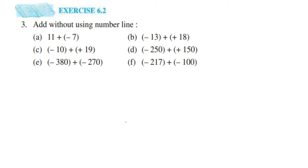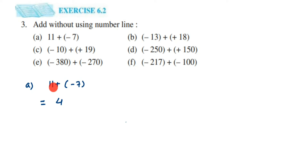The first question is 11 plus minus 7. Both integers have different signs, so we subtract: 11 minus 7 is 4. What will be the sign? Which number is greater — 11 or 7? Eleven is greater and 11 is positive, so the answer is plus 4, or you can simply write 4.